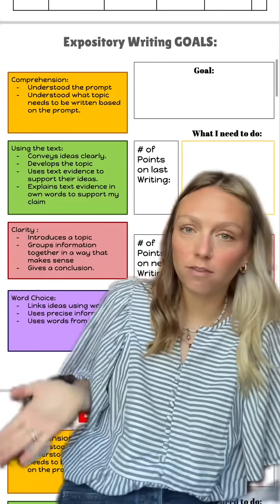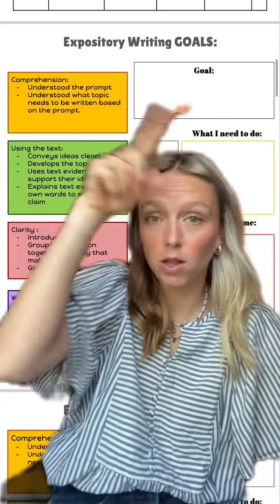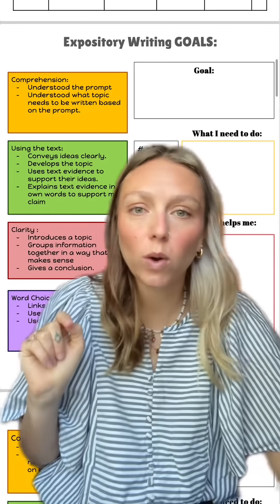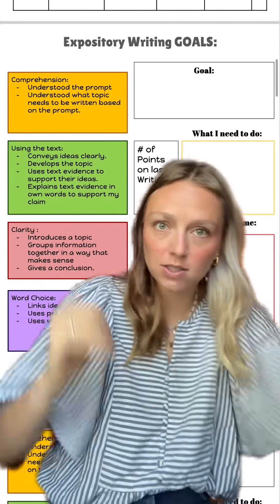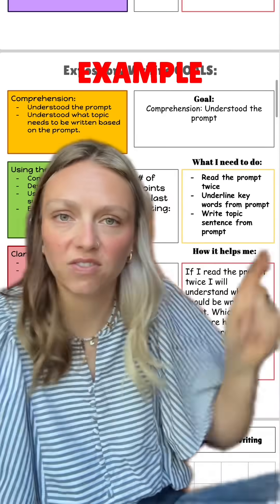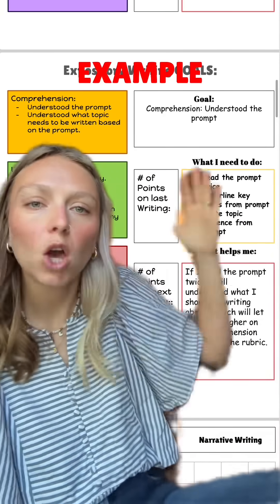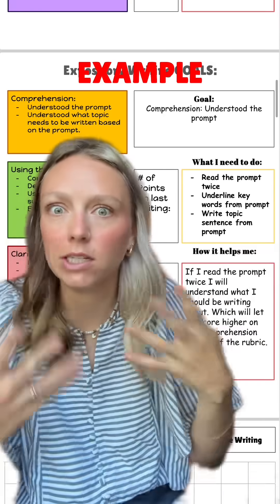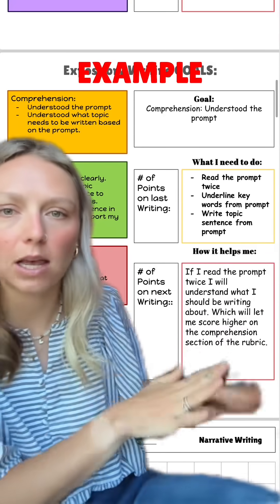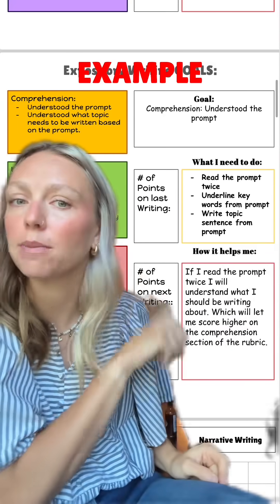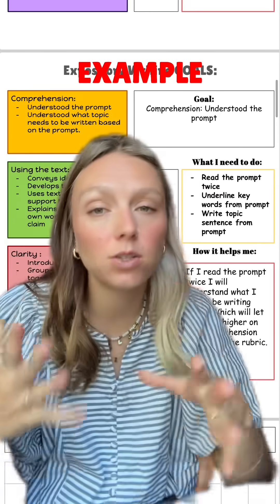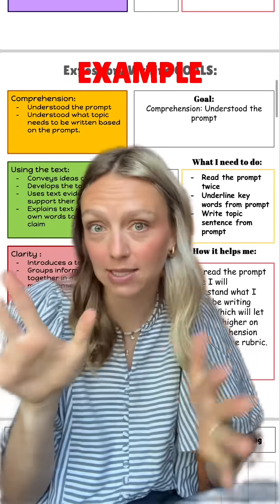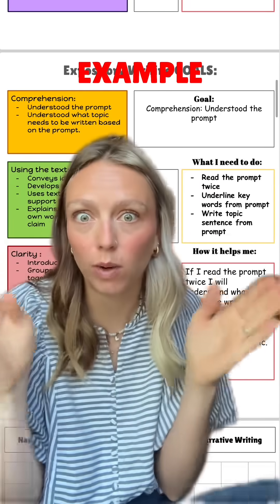Taking that rubric, these are all of the goals I've come up with that follow the rubric exactly. The rubric is broken into four parts: comprehension, only text, clarity, and word choice, and kids pick one of these things. For example, comprehension — understanding the prompt — they need to read the prompt twice, underline keywords, all the stuff we teach them. Then they note what score they got last time and what score they're hoping to get next time. I do go over with students what a reasonable score is — if you scored three, you're probably not going to score ten next time, so thinking about those little wins.